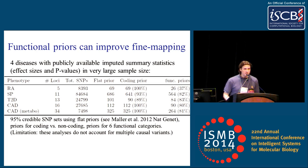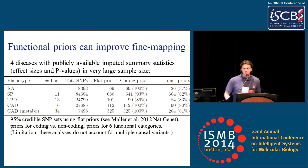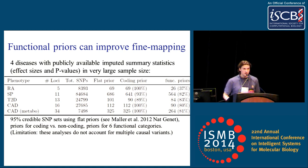One final point: functional enrichment can be useful for fine mapping. Using priors from functional enrichment information can greatly improve the efficacy of fine mapping. This table is a best-case scenario where enrichments equal what we observed in the meta-analysis of all traits, and assuming the enrichments are inferred with perfect accuracy — under those circumstances you can get a substantial reduction in the 95% credible SNP set for fine mapping for these traits, for which publicly available imputed summary statistics have been released.